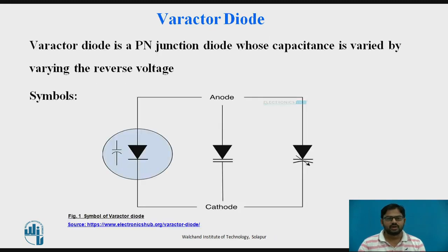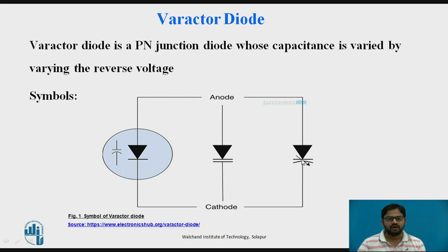Let's start with the Varactor Diode. The name itself suggests it is a variable reactance diode. It is also called a VariCap, meaning variable capacitor. The Varactor Diode is a PN junction diode in which the capacitance is varied by changing the reverse bias voltage across it. The symbol has an arrow indicating that the capacitance is varied by changing the voltage across it.